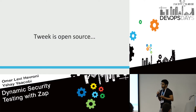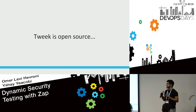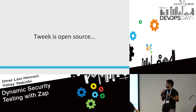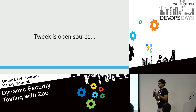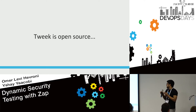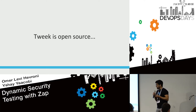Another reason we prioritized security testing is that Tweak is an open source solution. In open source, security is more challenging because all the code is publicly available on the internet. We can't obscure our security in Tweak, and vulnerabilities affect not only us but other companies using Tweak as well.